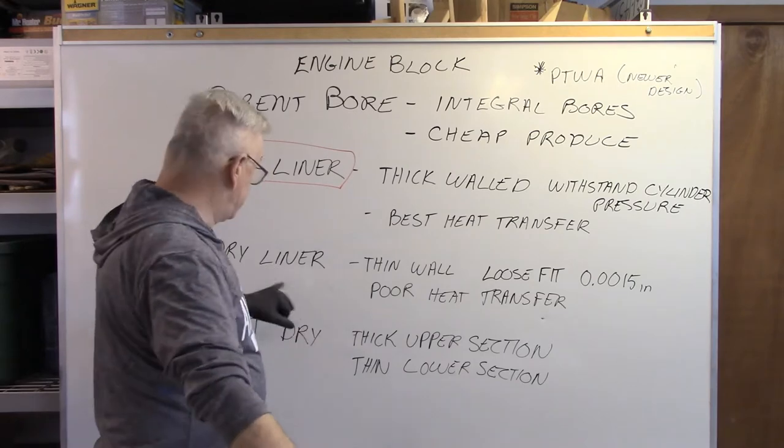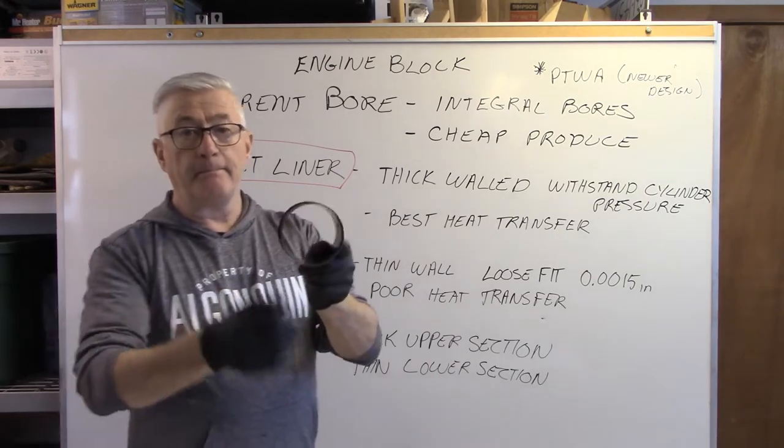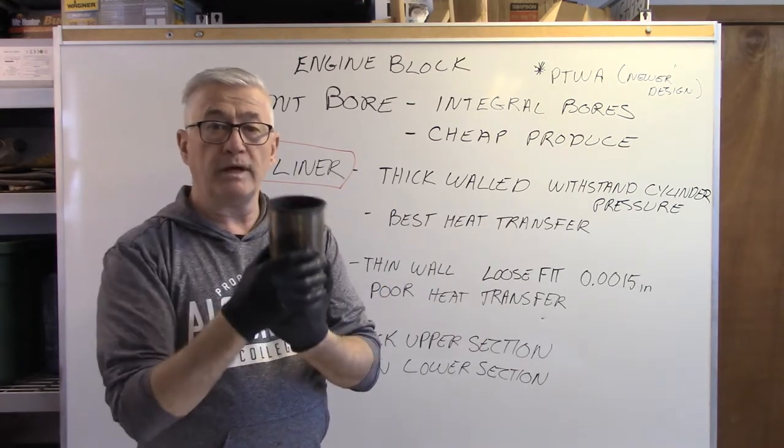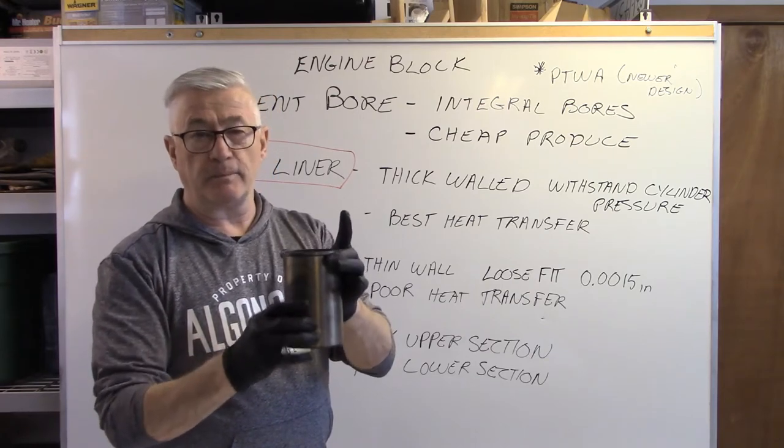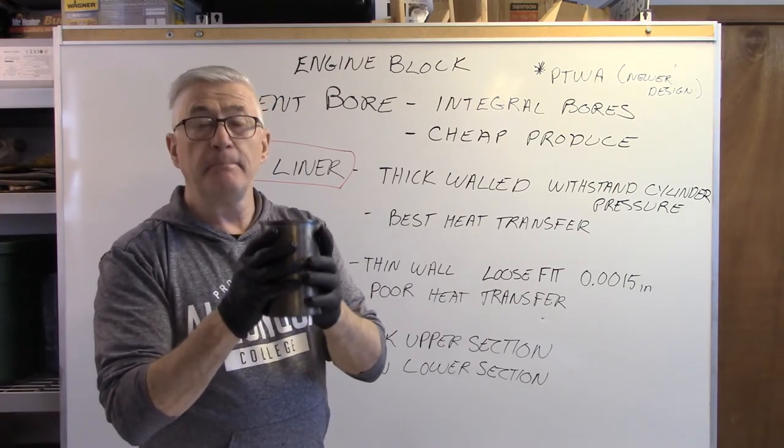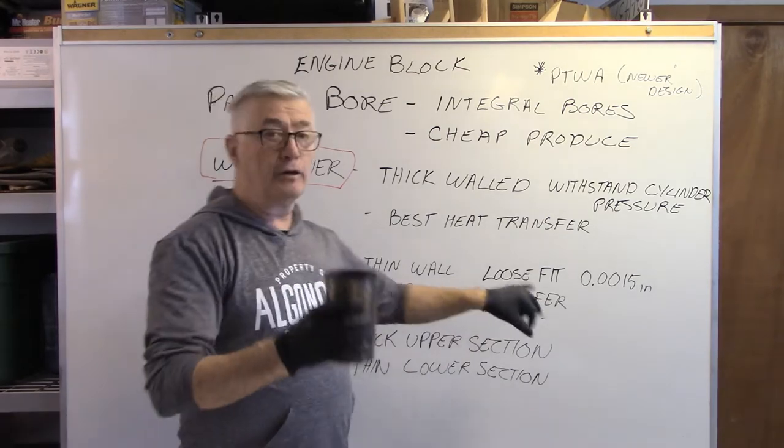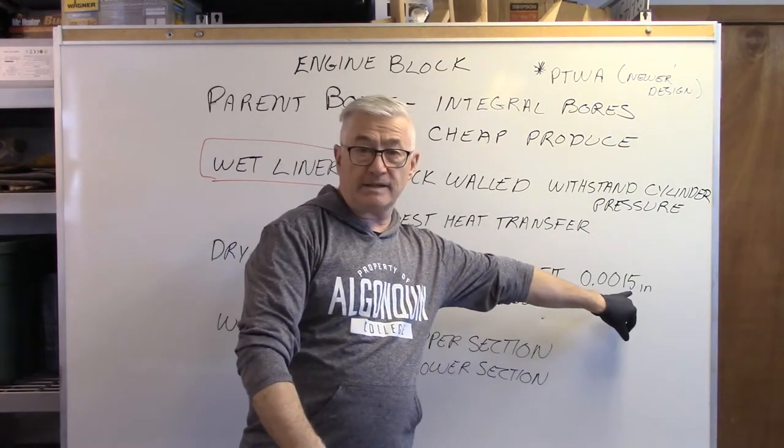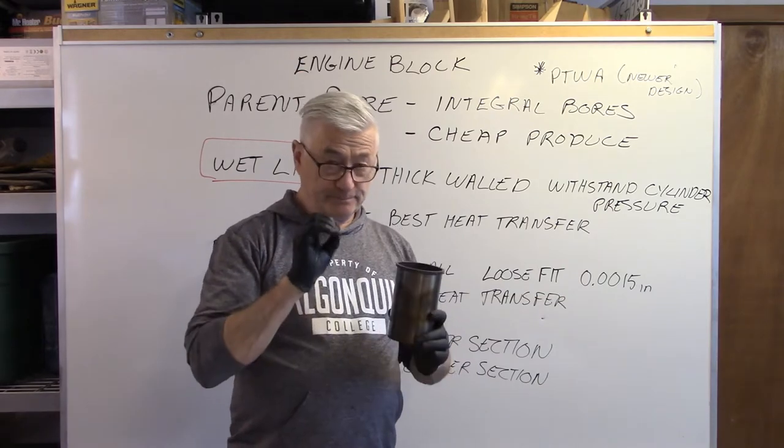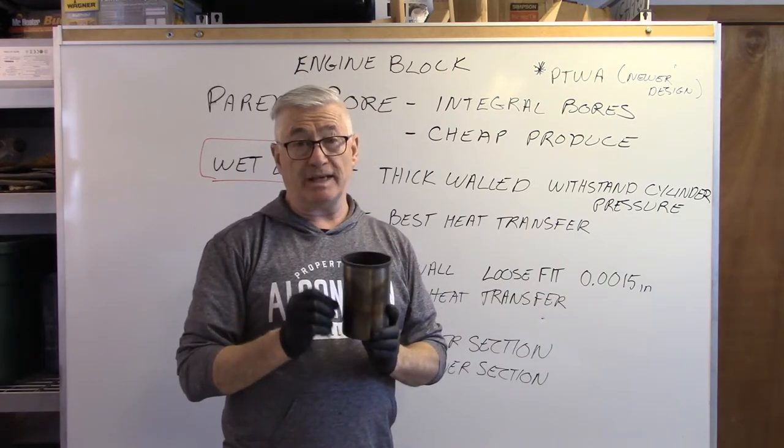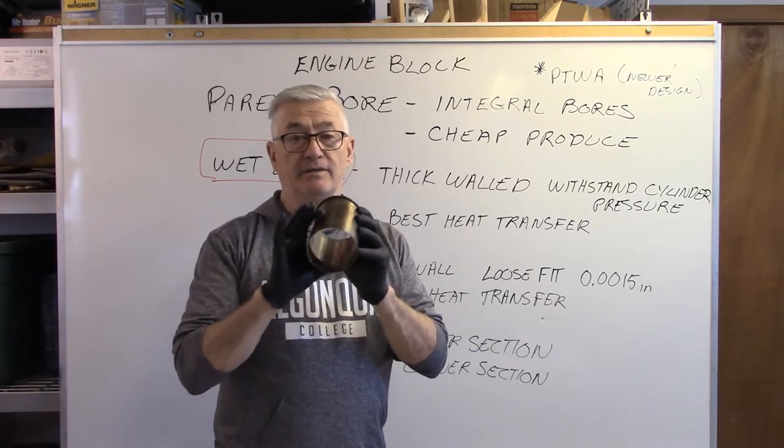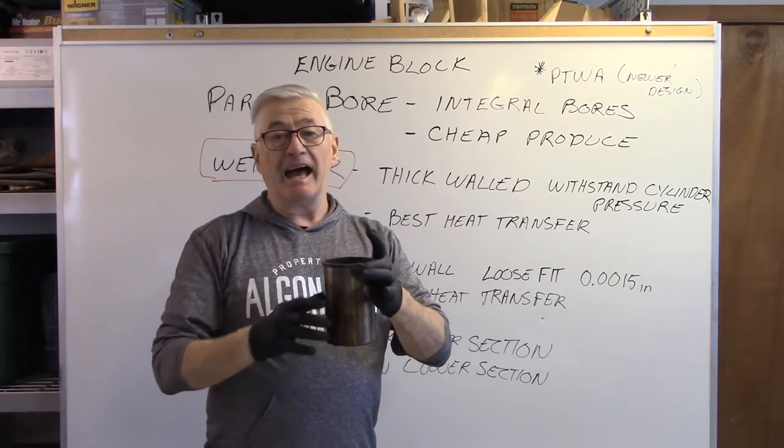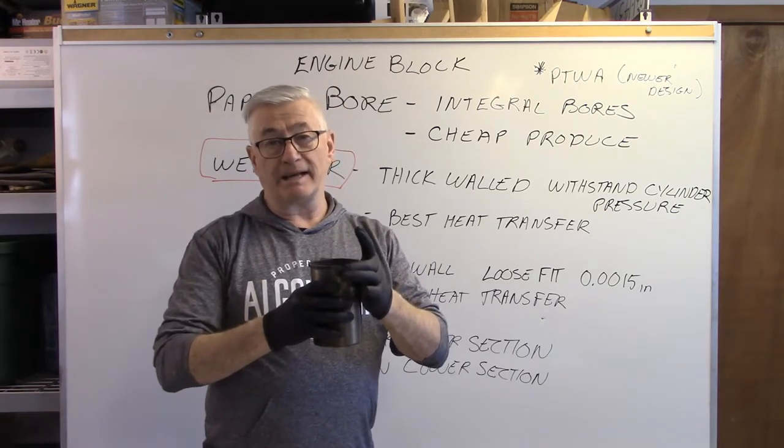Another style is called a dry liner. They are much lighter, much thinner. What we can do with these is we simply put them in and there is a minimal contact or even referred to as a loose fit. A loose fit and please remember that this is four decimal points. So a loose fit dry liner is 15 ten thousandths of an inch difference between the outside of the liner and the inside of the bore in the block.